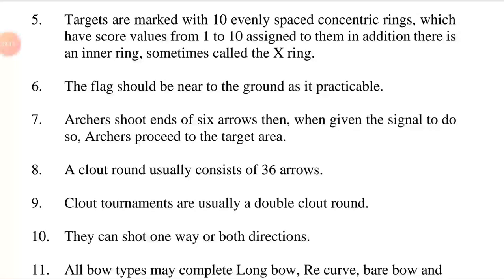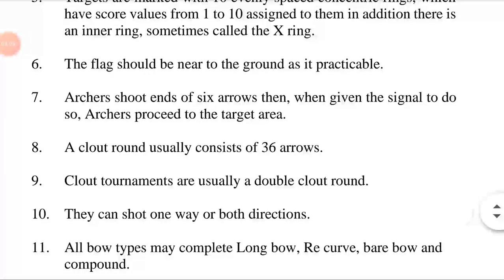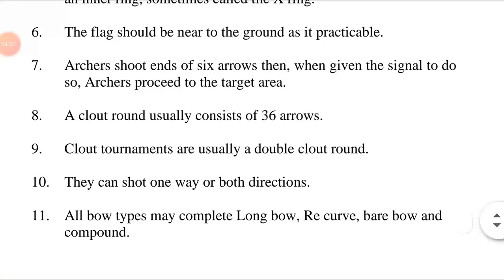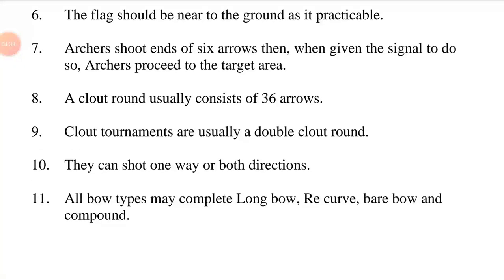The number of hits may also be taken into account as another tiebreaker. The flag should be near to the ground as is practical. The flags are colored from the center outward: gold, red, blue, black, white — these are the colors of an archery target. Each arrow scores points depending on which scoring zone it lands in; scoring zones are defined by maximum radii from the flagpole.